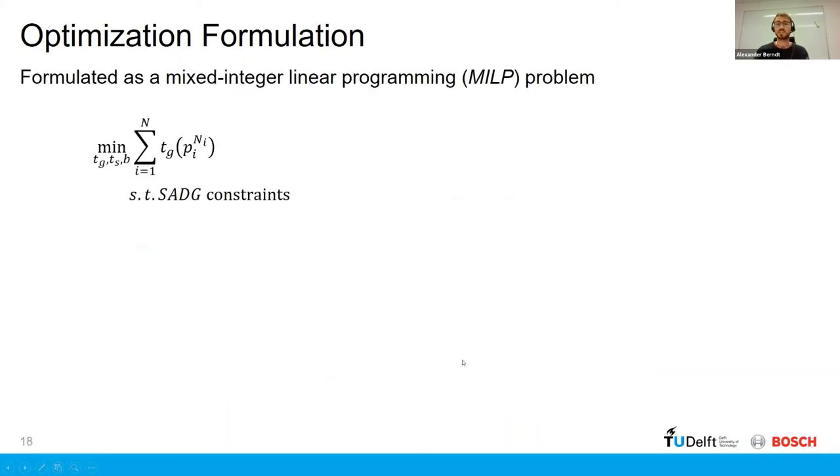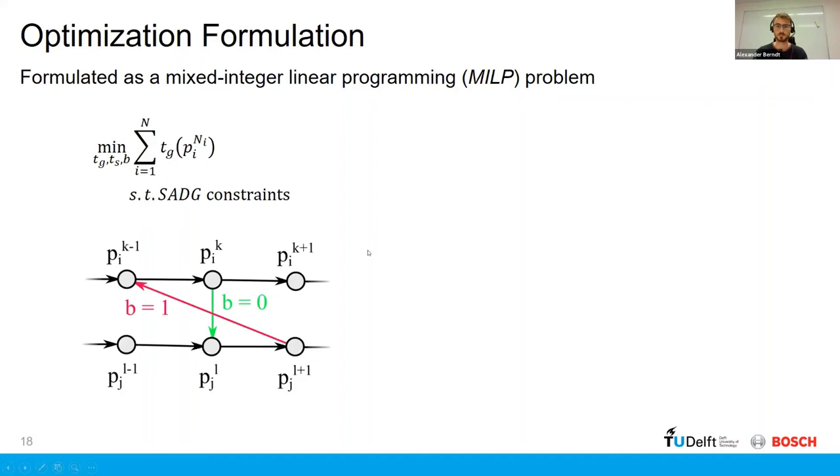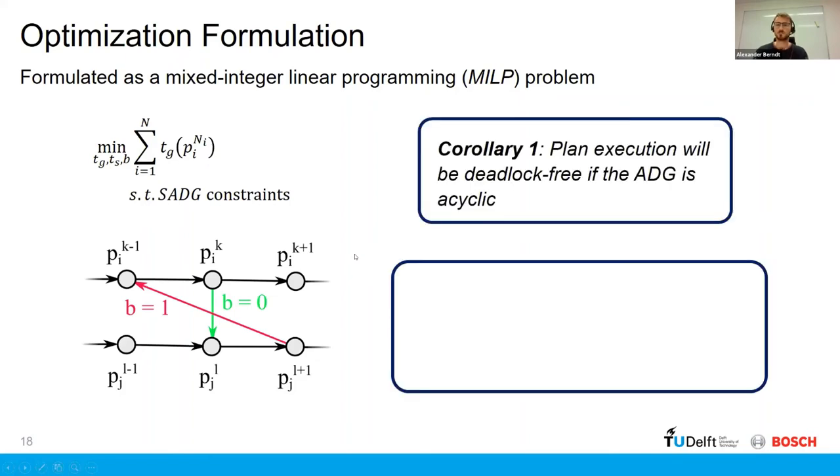So the optimization formulation basically looks like this, is we're trying to minimize the sum of the final times of each AGV to reach its goal, subject to those constraints which I introduced in the previous slide.